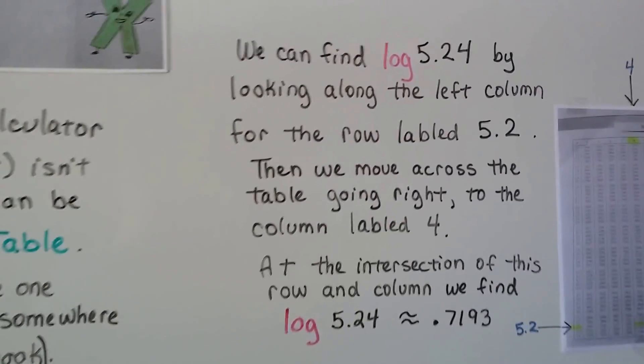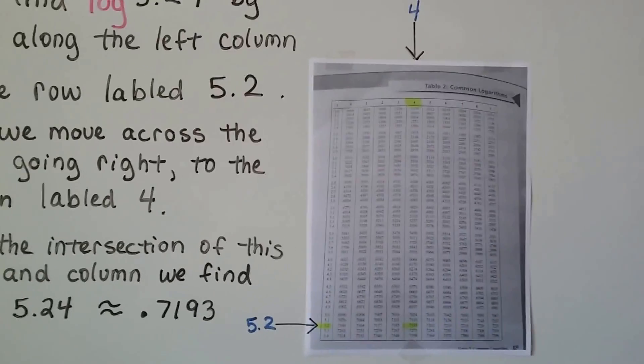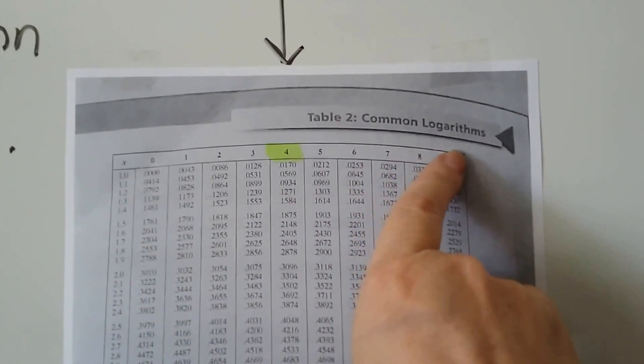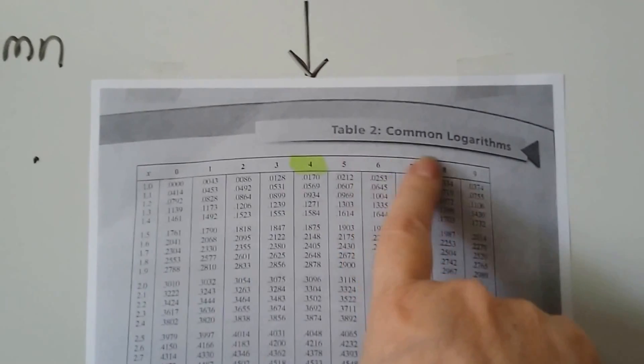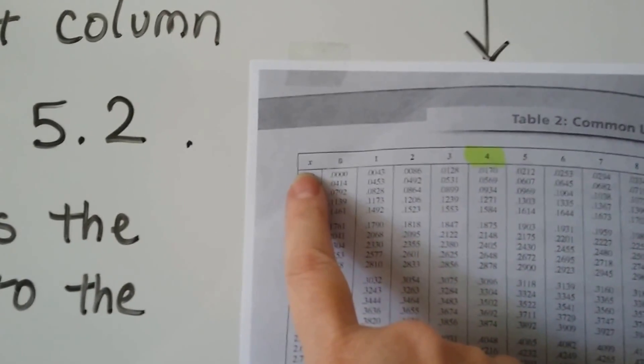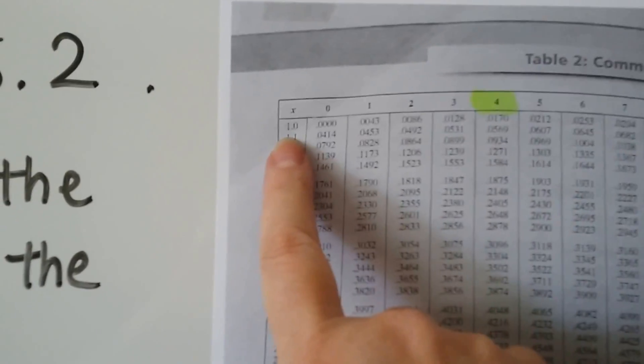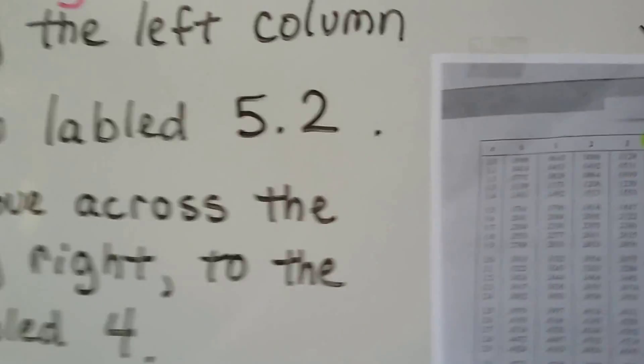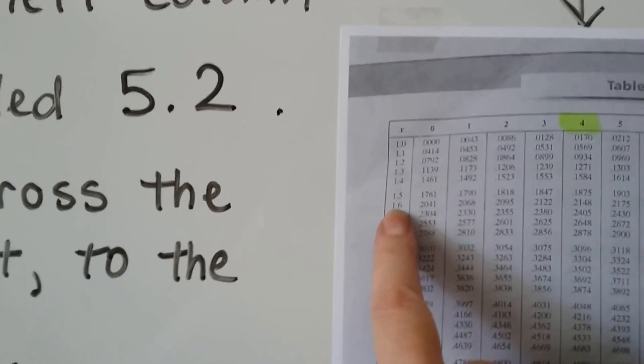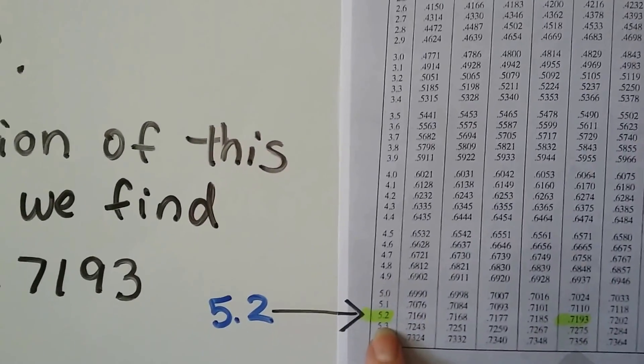So we can find log 5.24. Let me show you this table. This is from the appendix in the back of my book. This is table 2, common logarithms. If you look here, there's an x and you'll see 0 through 9 along the top. And then you'll see a bunch of numbers coming down here. We're going to go along the x here and follow along down until we see 5.2 right there.